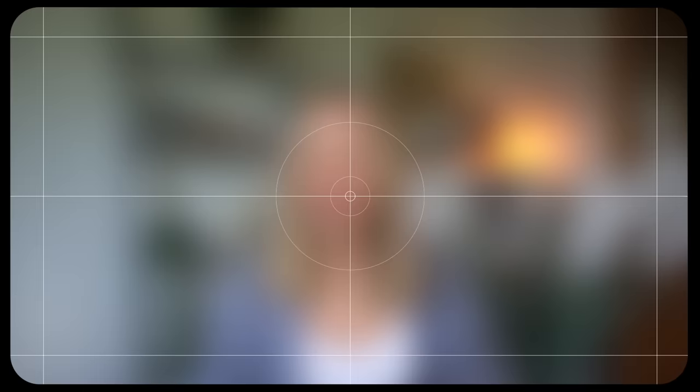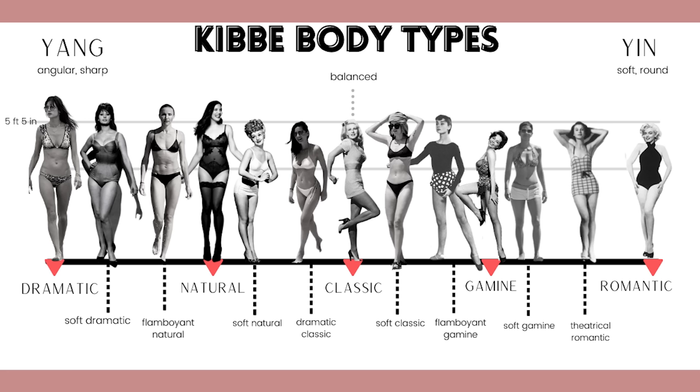My name is Ellie Jean, I'm a personal stylist, and on this channel we use body types to elevate our personal style and end the war with our wardrobes. Double curve is a concept used in Kibbe body types — these body types are theorized by a man called David Kibbe, who in the 80s came up with these 13, originally now 10, body types.